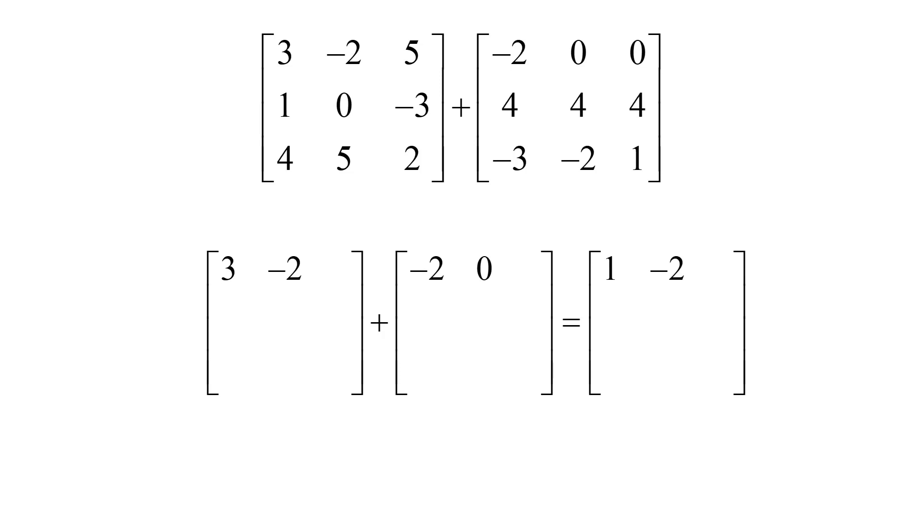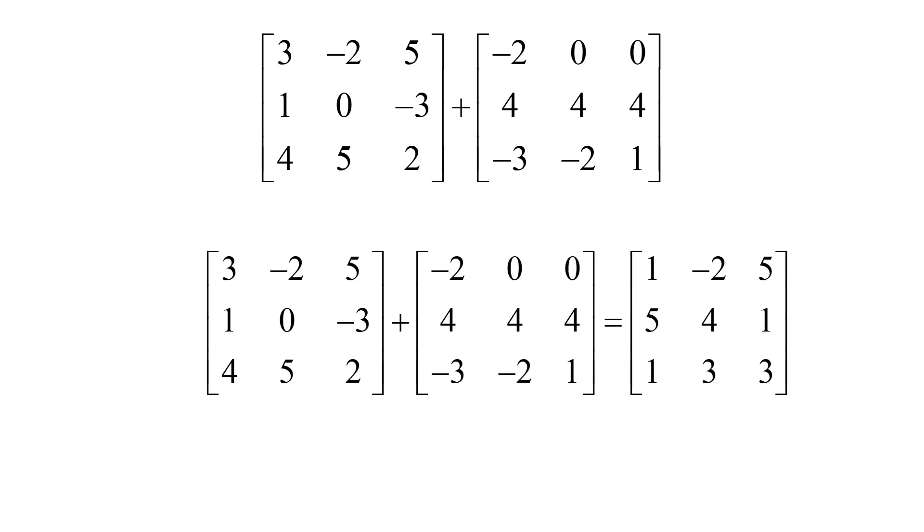Negative 2 plus 0 equals -2, and I continue in this manner until I get the final sum of the matrix.